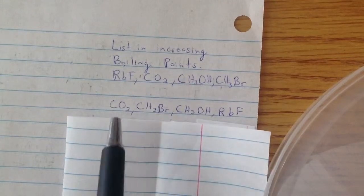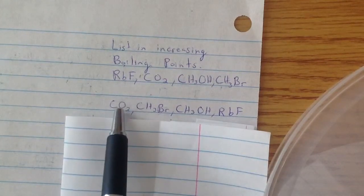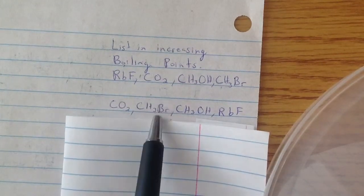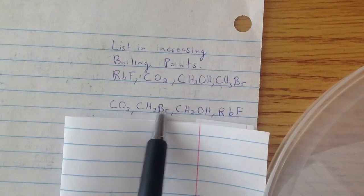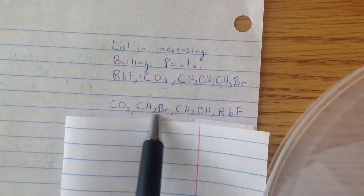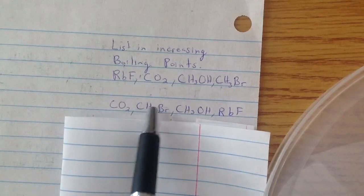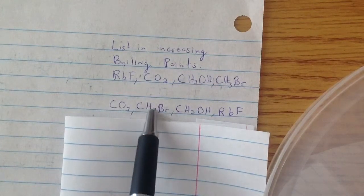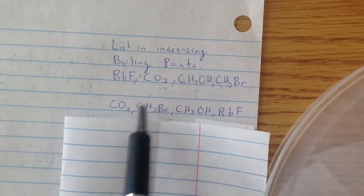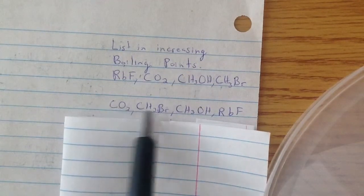So the overall list will look like this. CO2, because it only has dispersion forces. CH3BR, because BR, since it's electronegative, it's going to pull in these electrons and make it polar. If it makes it polar, it's going to be dipole and dispersion, which is stronger than this one.